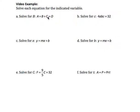So I have A plus B plus C equals D. When this is asking us to solve for B, what it means is to isolate B on one side of the equation and everything else on the other side.